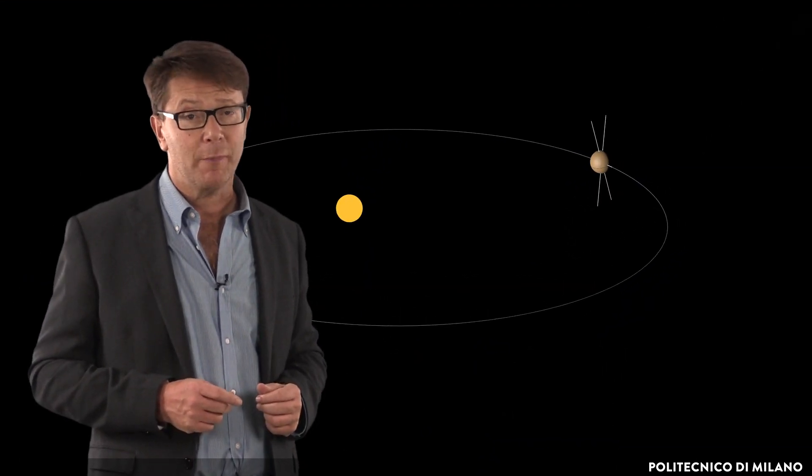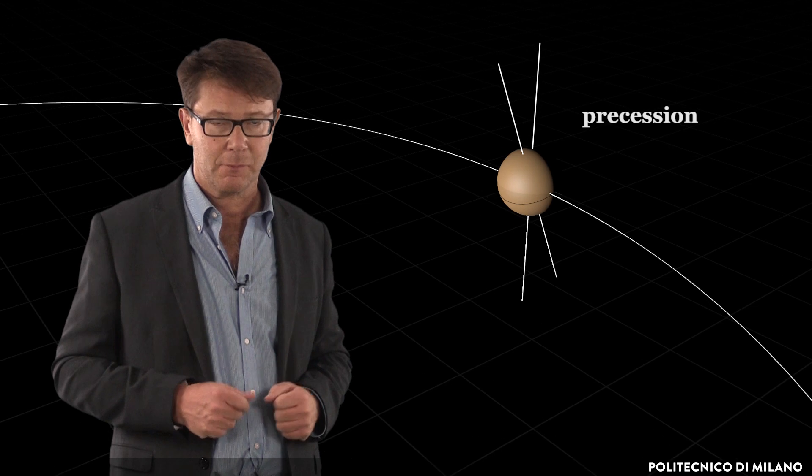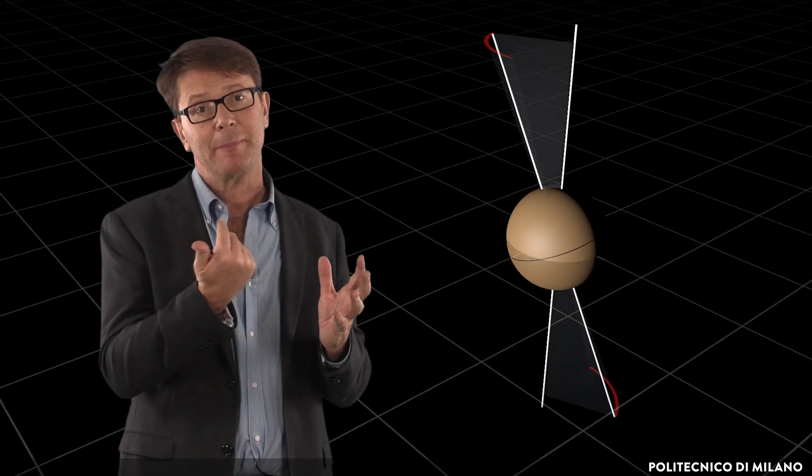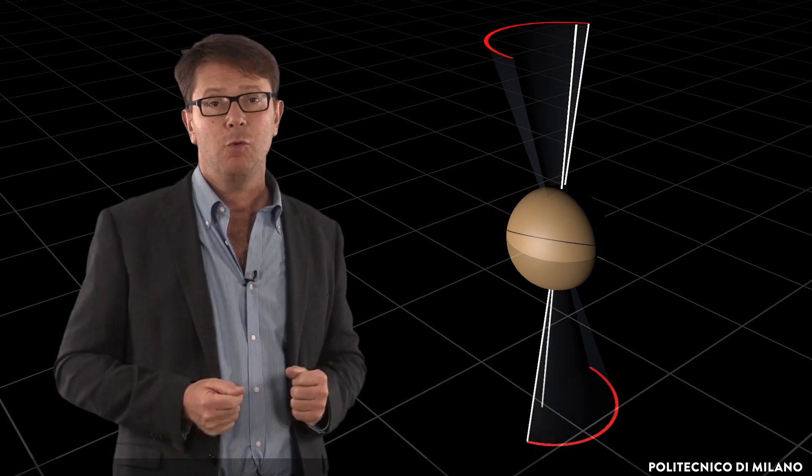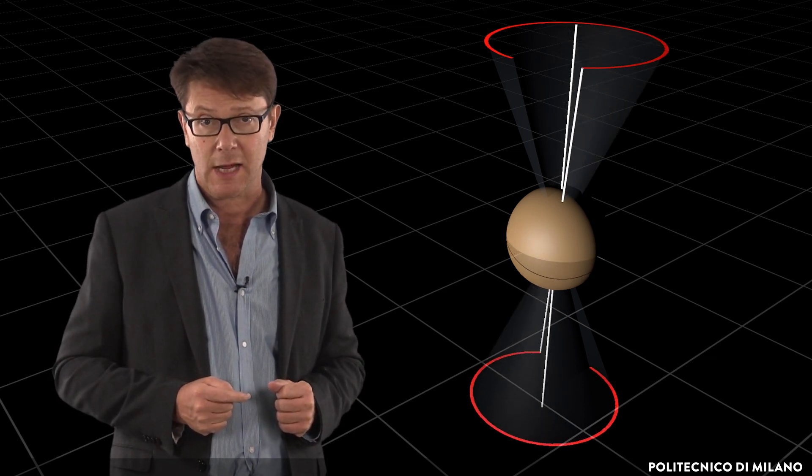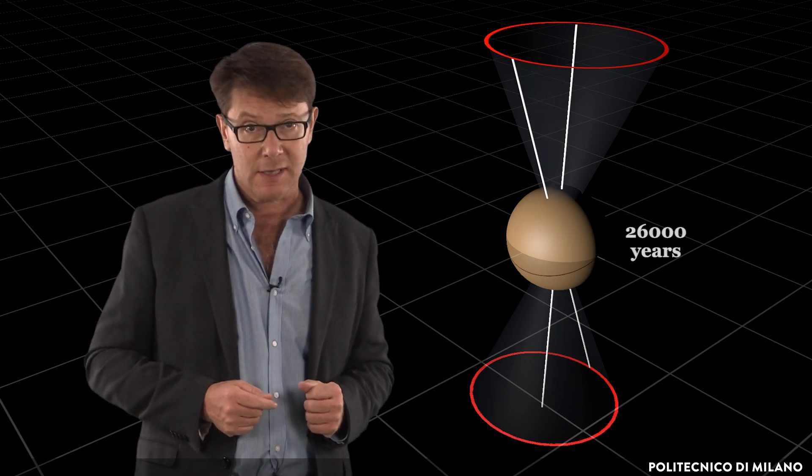The Earth axis has a movement called precession. Precession is a rotation of the axis around the perpendicular to the ecliptic, which completes along a very long period with respect to human life, about 26,000 years.